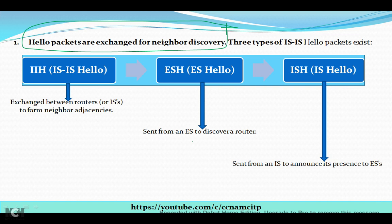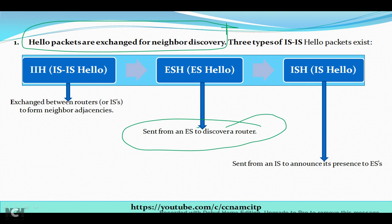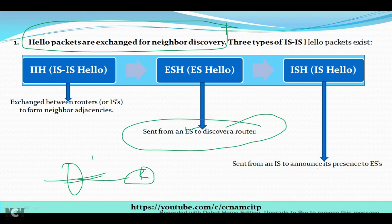ESH is sent by the End System to discover routers. So if I have an End System here and a router, the ESH will be sent from the End System to discover that router on the network. The third type, ISH — Intermediate System Hello — is sent from the IS to announce its presence to ES. After discovering the router, the IS sends this information to the ES, confirming that the router exists and providing its information.